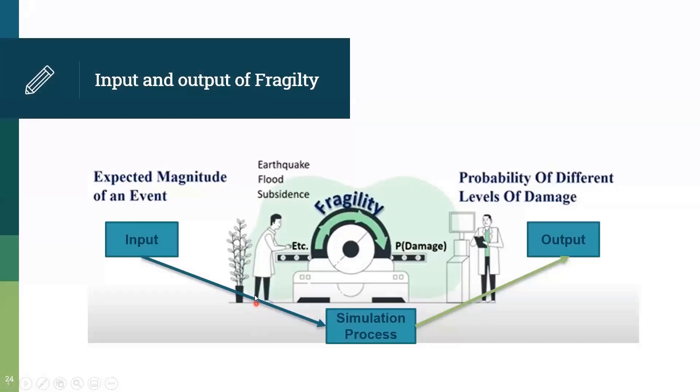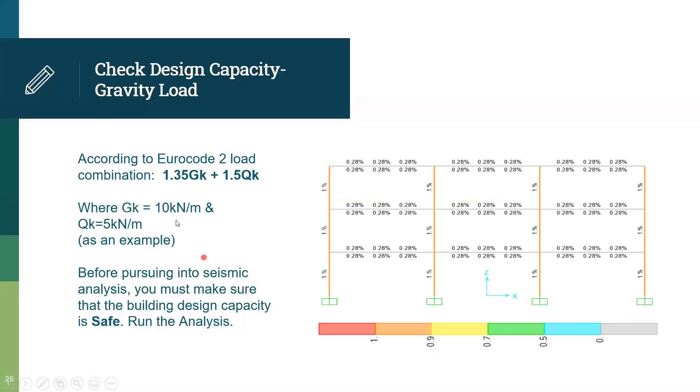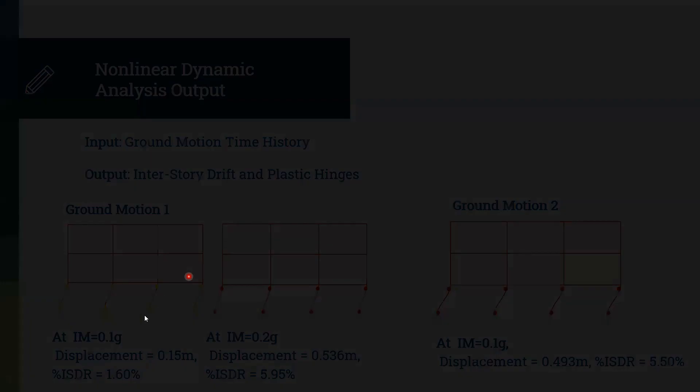So an example of input and output of fragility. We insert the ground motion, we do the simulation, we get the output, the probability of damage. We have a 2D model of RC frame system with beam size 40x40, column size 30x40, with material 30 MPa of concrete. The boundary condition is fixed support. After we model the frame, it is necessary to check the capability of the structure according to the gravity load, dead load, and live load to make sure that the design capacity is safe.